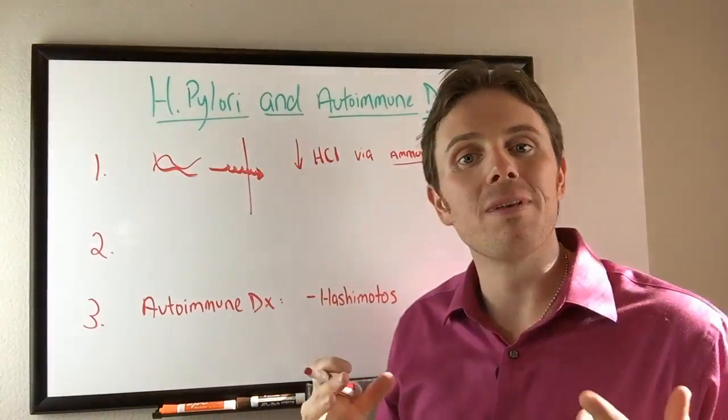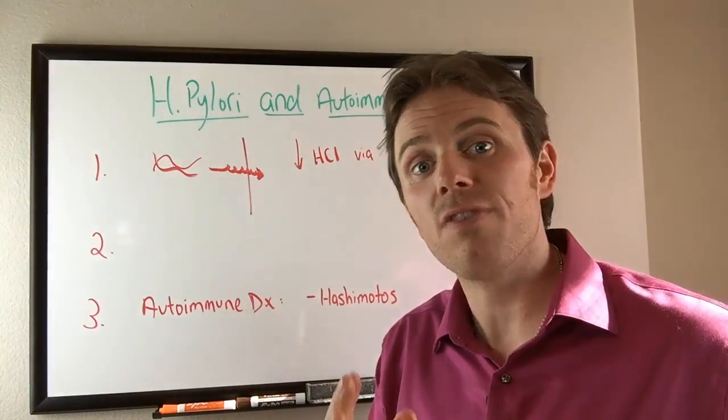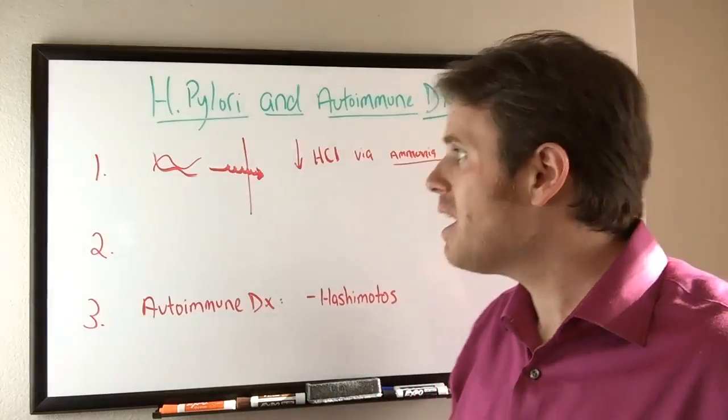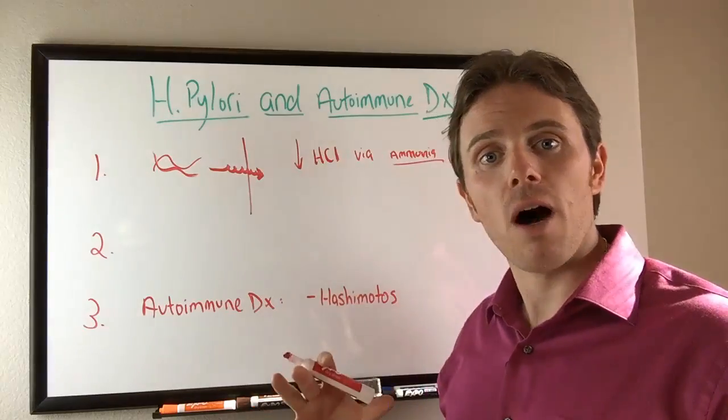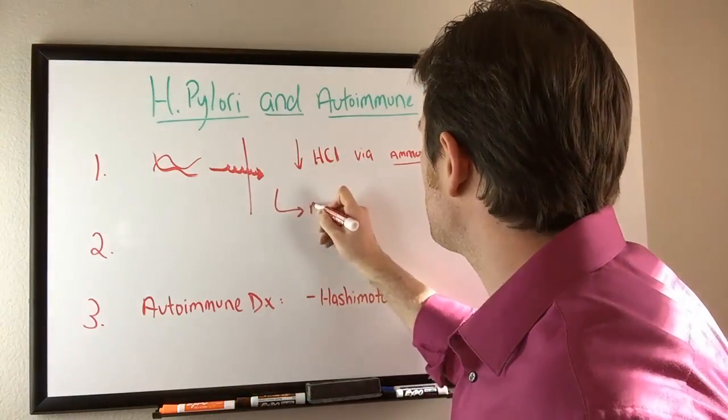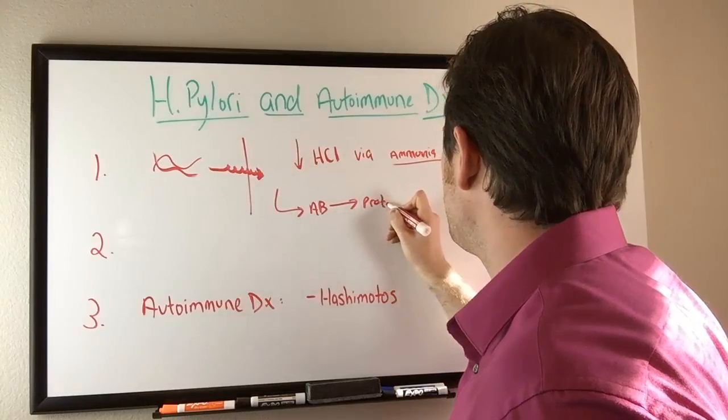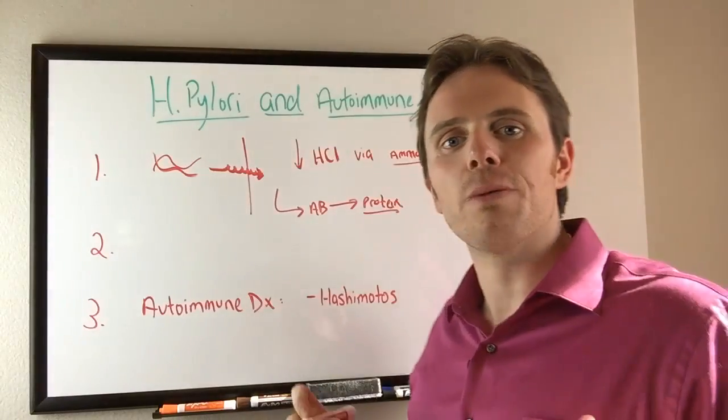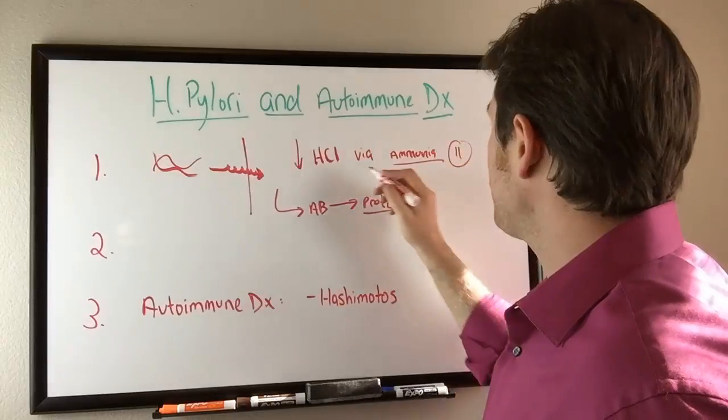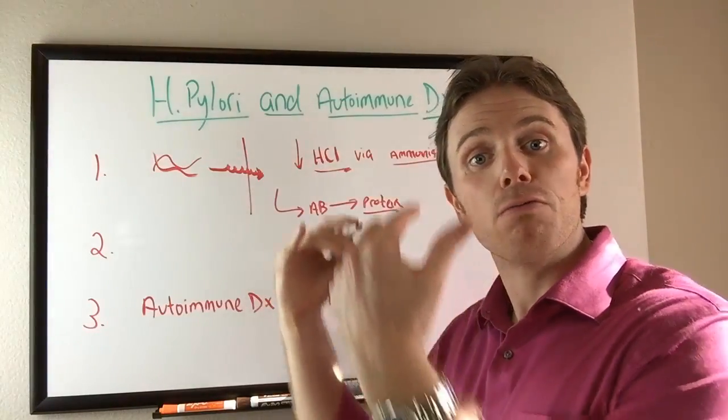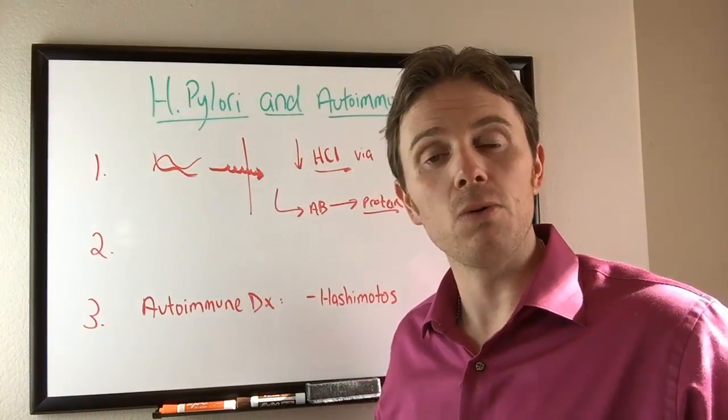Now this is important because the healthy pH in the stomach is about 1.5 to about 2 to 2.5. This is really important to be able to break down protein and the antibodies that are specifically in the immune system are primarily protein based. So if we're not able to absorb and break down protein, and H. pylori is affecting that via the HCL and ammonia mechanism by raising the pH, it can create nutritional deficiencies which can affect our immune system.